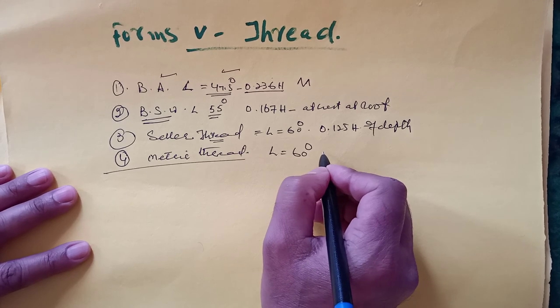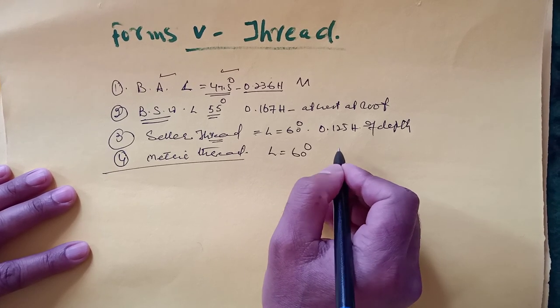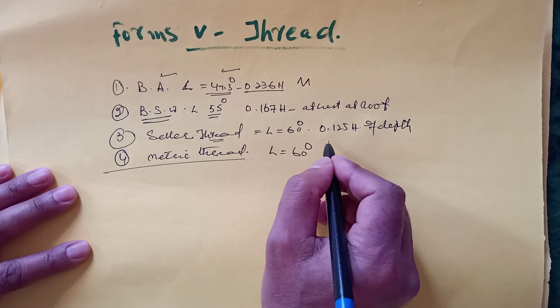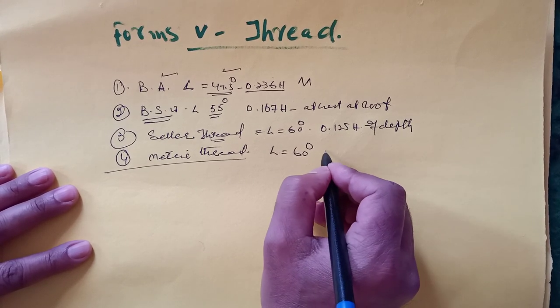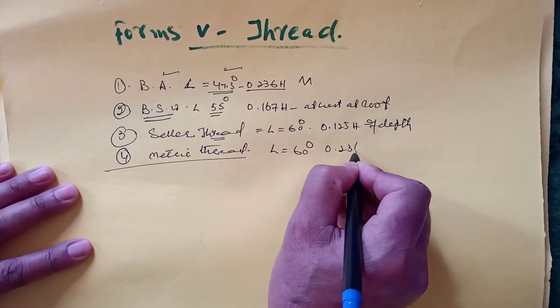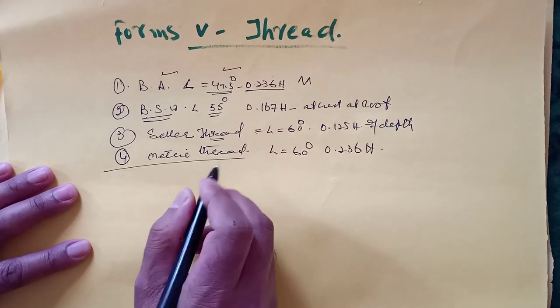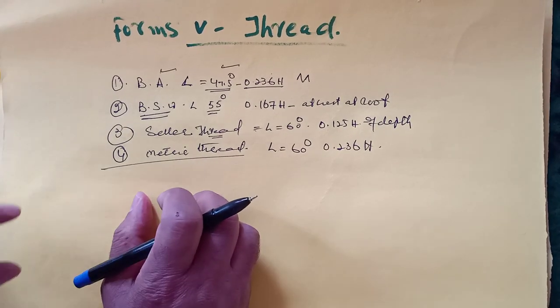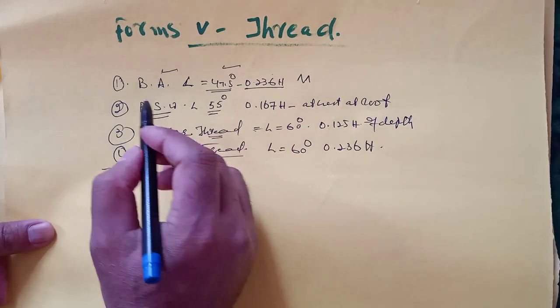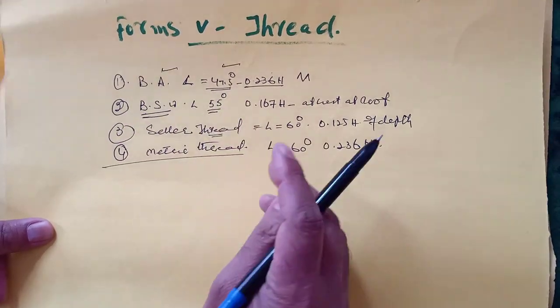And it is also rounded at crest and root. It may be trapezoidal or it may be a round shape, at 0.236H. Now I will show you simply how to construct these threads - one thread, rest you have to follow.